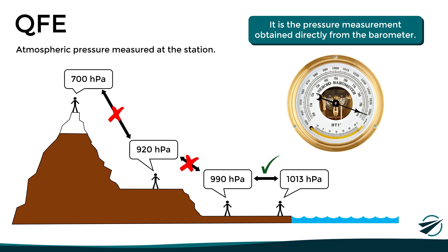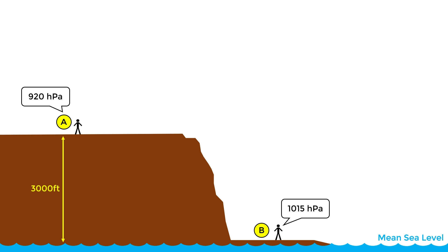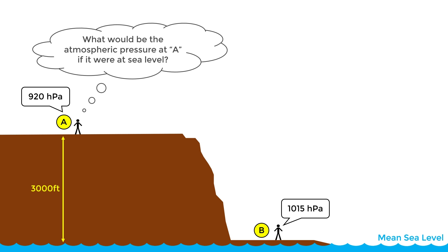Now, the question is, how can we solve this problem? Let's look at the following example. Here we have two weather stations, one at sea level and the other at 3,000 feet. Let's say that both of them report their current pressure or QFE. If we were to directly compare the two pressures, we could think that station A has a lower pressure than station B. However, according to what we said previously, we just cannot make this comparison. So, a possible solution would be to determine the pressure of station A if it were at sea level.